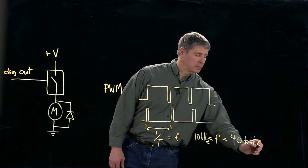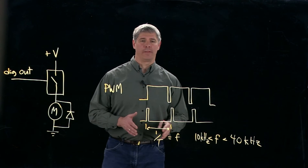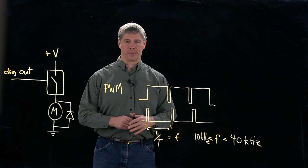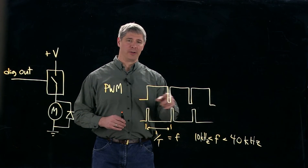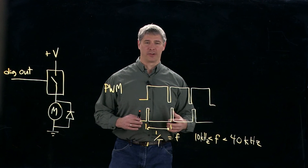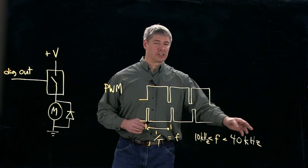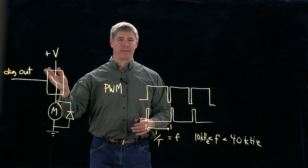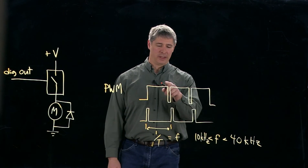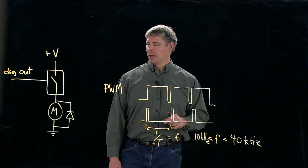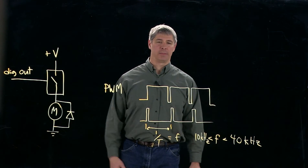The danger with using too low of a PWM frequency — say you chose one hertz — is that the motor will actually speed up and slow down during each cycle, so you are not going to get a good averaging effect. And if your PWM frequency is too high, then the switch may not have time to open and close fully during each waveform. So for high frequencies, you need a high-speed switch.